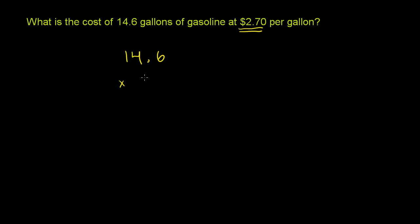So let's just multiply it times 2.7. It makes things a little bit simpler. And I think you'll appreciate $2.70 is the same thing as $2.7 per gallon. So let's multiply this out.